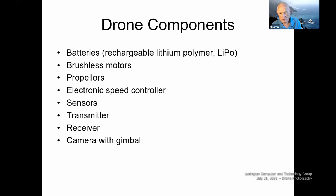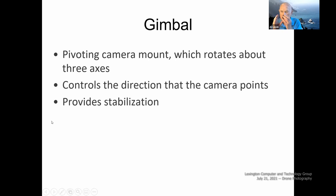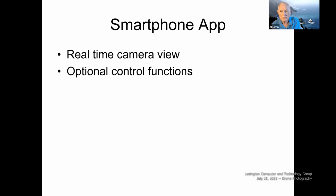The drone has all kinds of sensors. It has a radio transmitter and receiver built in, and it comes with a camera with a gimbal. A gimbal is a mount that holds the camera in place and rotates it through three axes — this way, this way, and this way — controlling the direction in which the camera is pointing and providing stabilization. The smartphone app gives you a real-time view of what the camera sees, and when you click the shutter, you record what the camera is seeing.